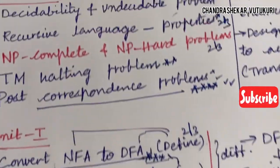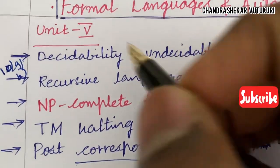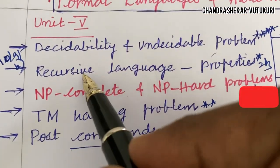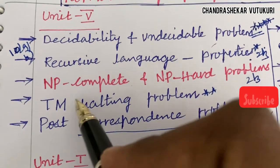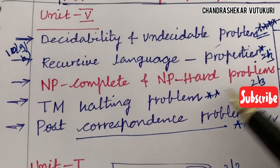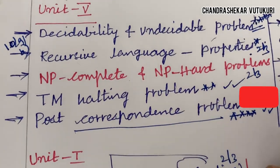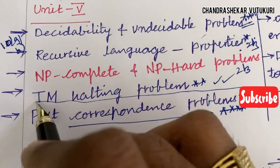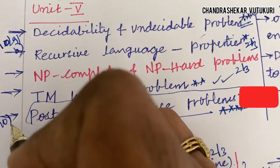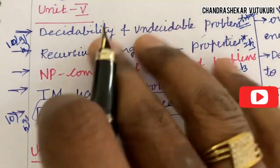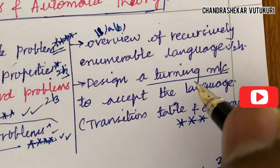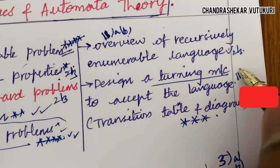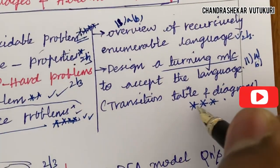Work out every concept neatly, highlighting key points and mentioning question numbers. For Unit 5, questions 10A and 10B — decidability and undecidability problems — are topmost questions. Recursive language properties are a 2 or 3 mark question. NP-complete and NP-hard problem differences may be a 2 or 3 mark question. The TM halting problem is a gunshot question, and the Post Correspondence Problem is a highlighted question — expect either question 10 fully or 10AB. An overview of recursively enumerable languages may be a 2 or 3 mark question. Designing a Turing machine to accept a language — question 11AB — related to transition tables and diagrams is also expected.